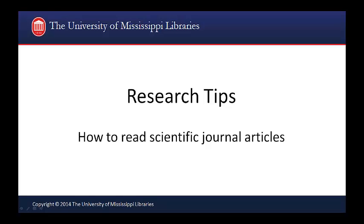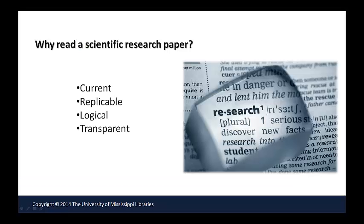This tutorial will give you some tips on how to read a scientific journal article. Scientific journal articles provide very current information on a research topic. They are a primary way that scientists inform others about their most recent research findings. In these research articles, scientists provide detailed information on how their research was done and what data was collected, allowing others to try and replicate the research to confirm its findings. It also allows other scientists to compare and contrast their findings with results from other published research. This transparency in reporting results and findings is a hallmark of free and open scientific communication.